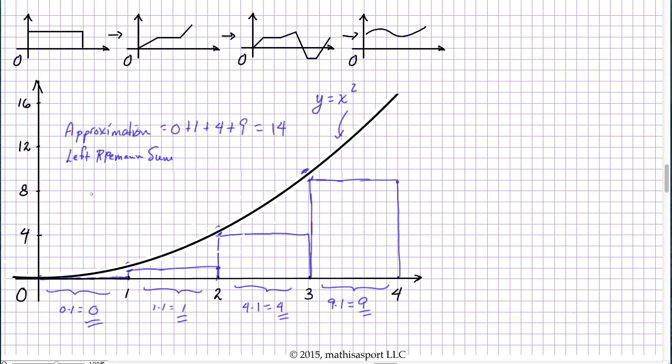It's an approximation for the signed area from 0 to 4 of y equals x squared. And if you remember, we also have notation for that special calculus notation that looks like this. So we're going to say that this signed area from 0 to 4 of the x squared function is approximately 14.